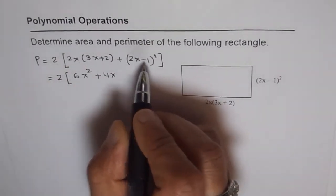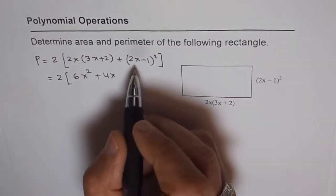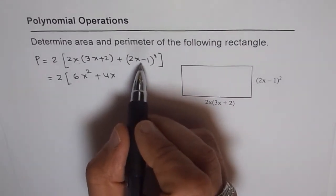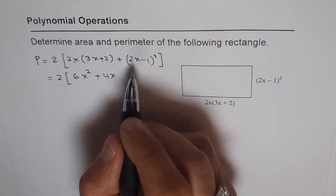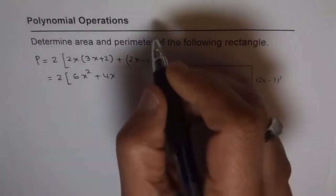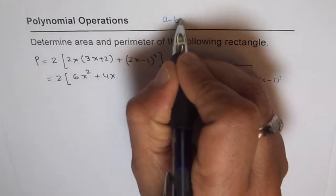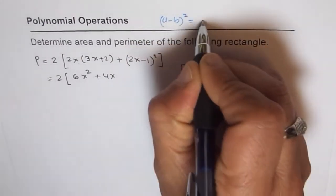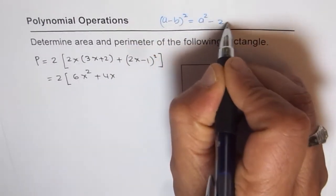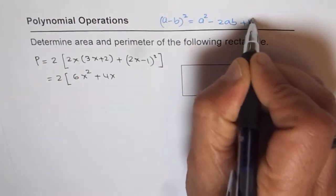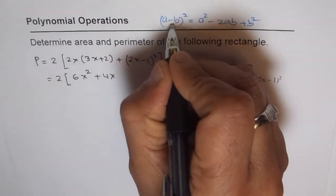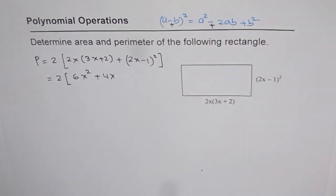Now on this side it is 2x minus 1 whole square. So we can expand it using the formula which is, let me write down the formula here, a minus b whole square equals a squared minus 2ab plus b squared. In case it is positive then this term is positive.